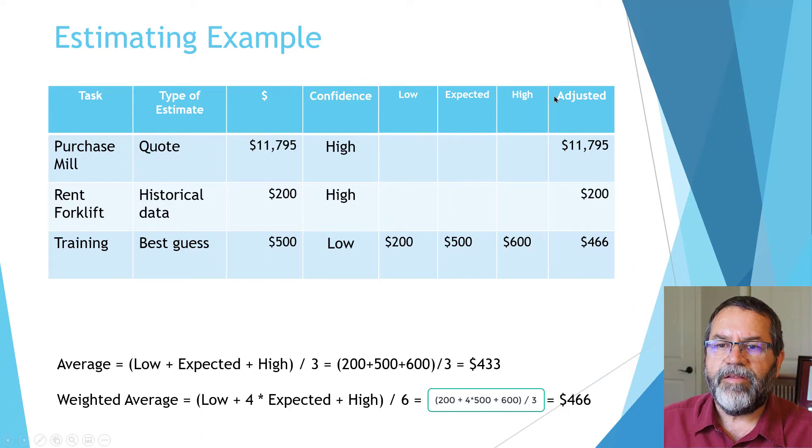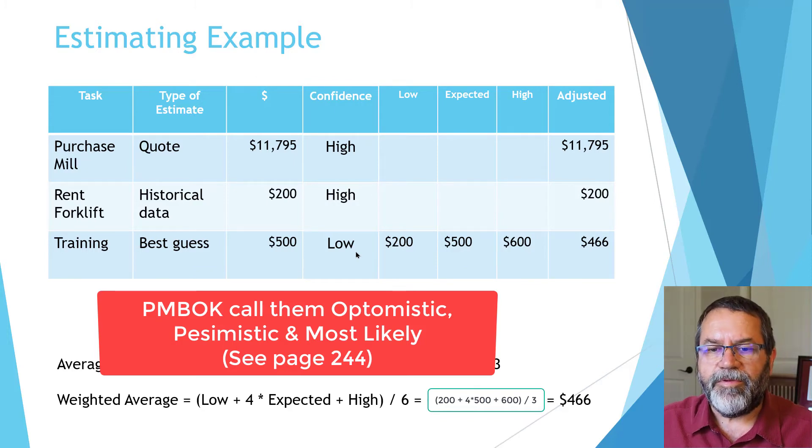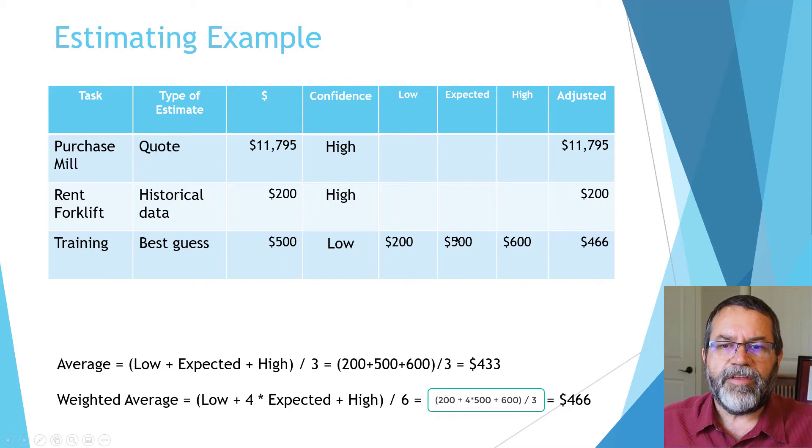On the right, I've got my adjusted price. For the mill, I've got a quote at a firm price, so I'm not going to adjust that—just plug in $11,795. Same with the forklift at $200. Now for training, I'm going to take the low price—I think it could be as low as $200, as high as $600, and what I expect is $500. There's two ways I can handle these parameters.